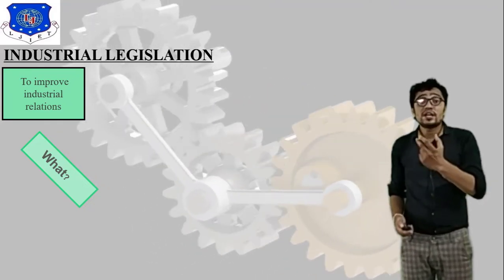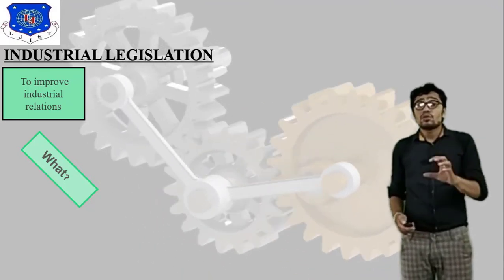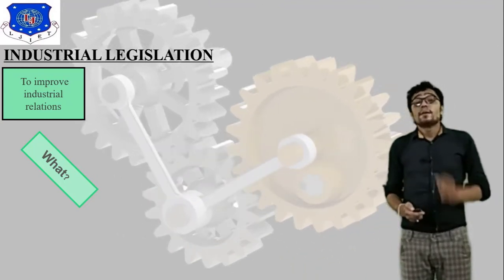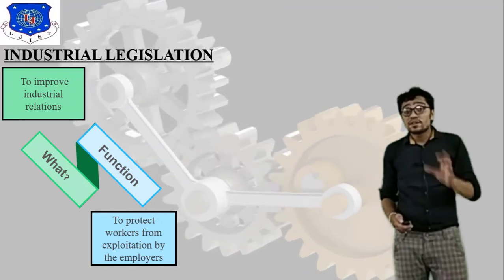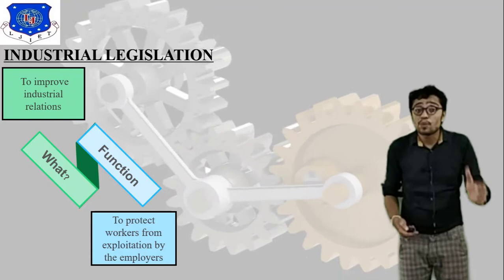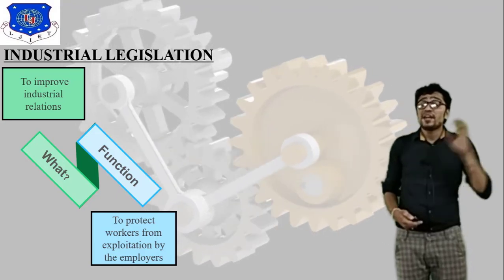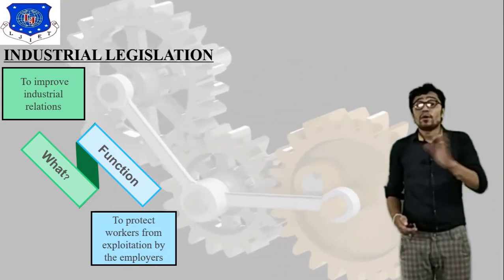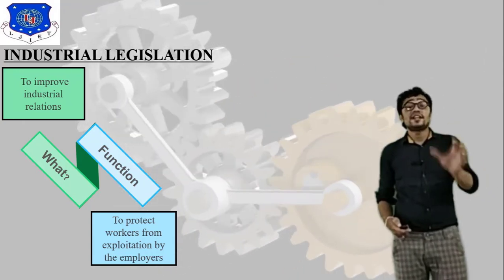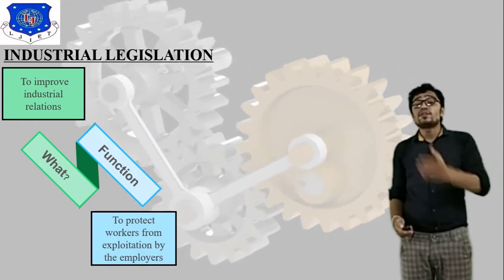What is the goal of Industrial Legislation? First, to improve industrial relationships. Second, what is the function of Industrial Legislation? To protect the workers from exploitation by the employers — it is very important to protect workers from exploitation by employers.